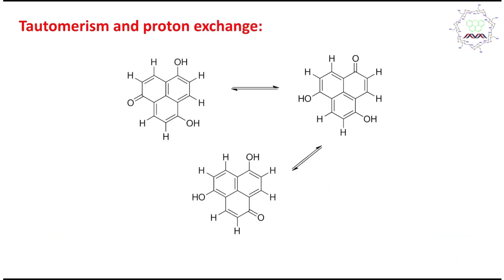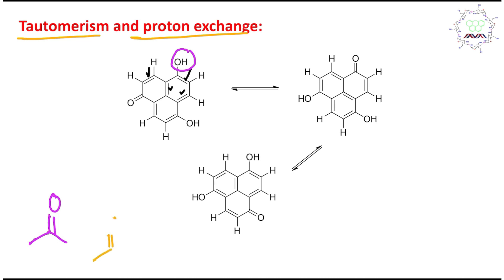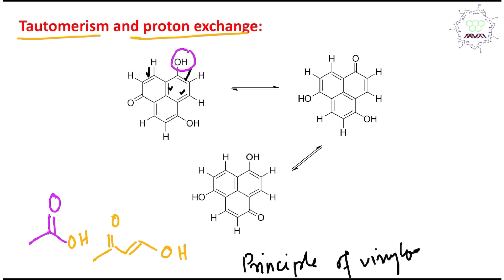The actual phenomenon here is based on tautomerism and proton exchange. I am focusing on tautomerism. There is a carbonyl group in conjugation through this system, connected to the OH group. You can consider this concept as a vinylogous acid. This is like a simple carboxylic acid, and its vinylogous counterpart is a vinylogous acid. I have already discussed a dedicated video on the principle of vinylogous acids.